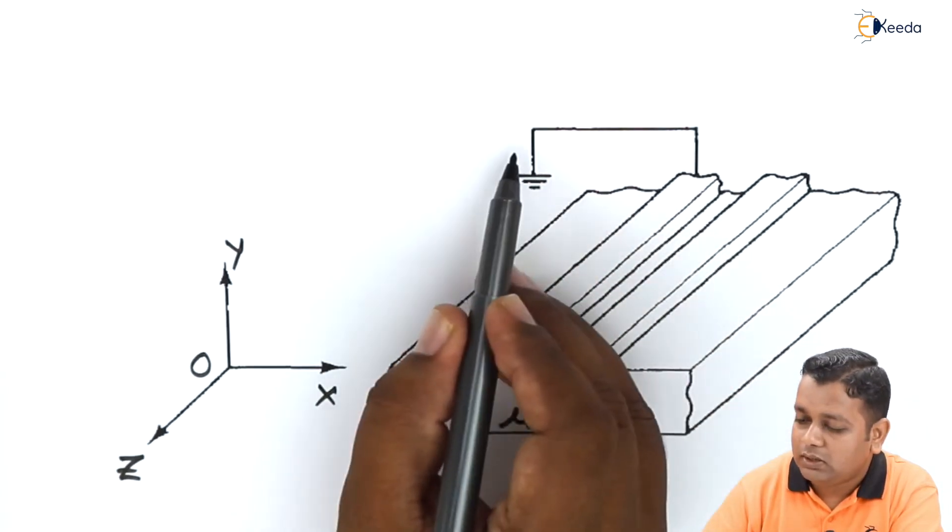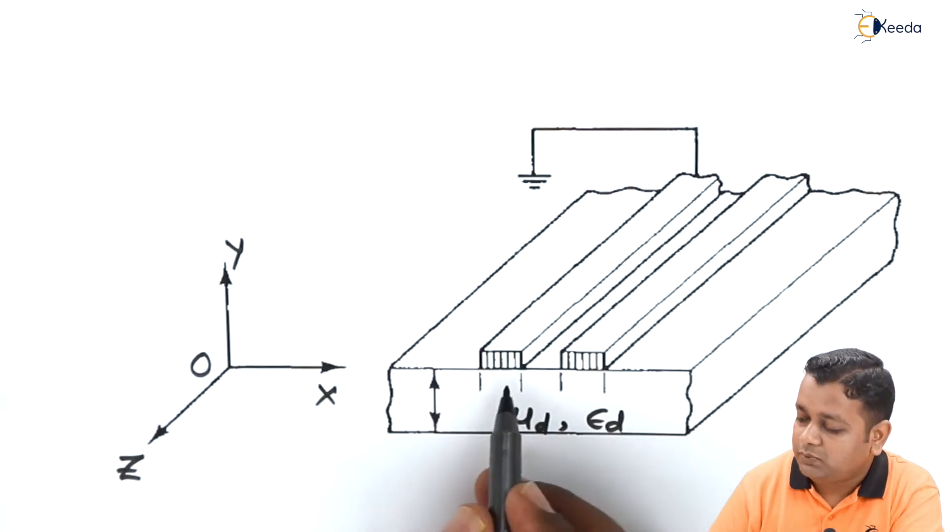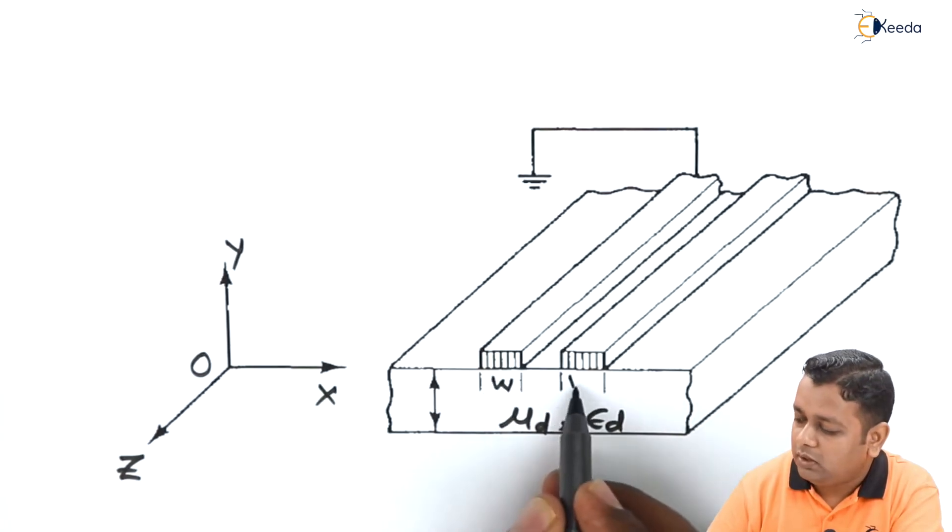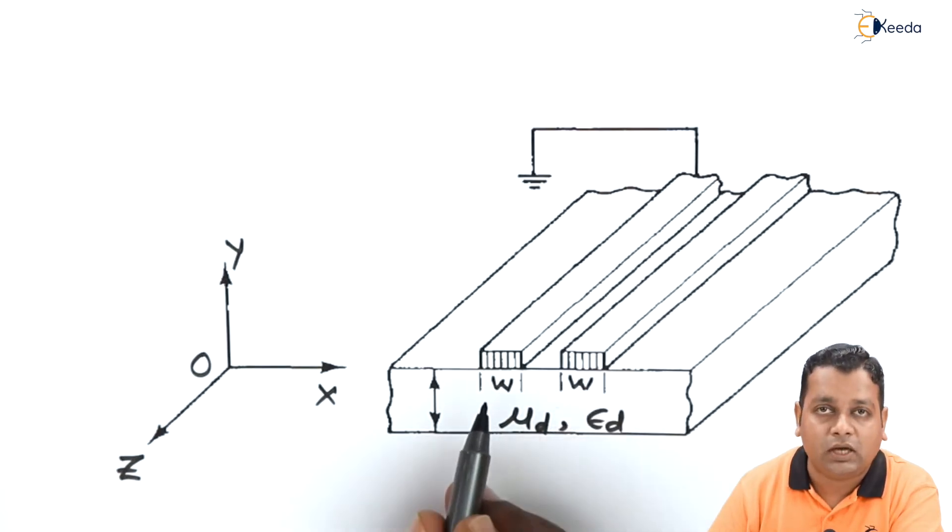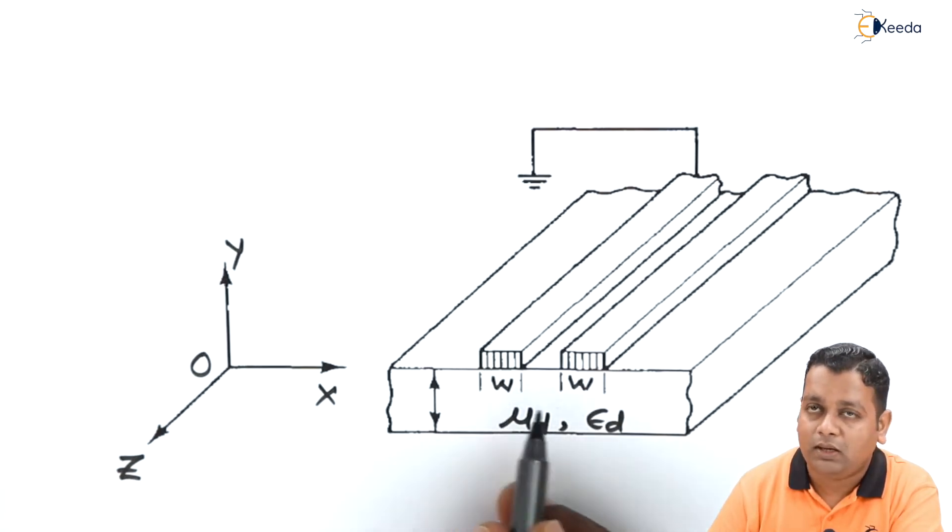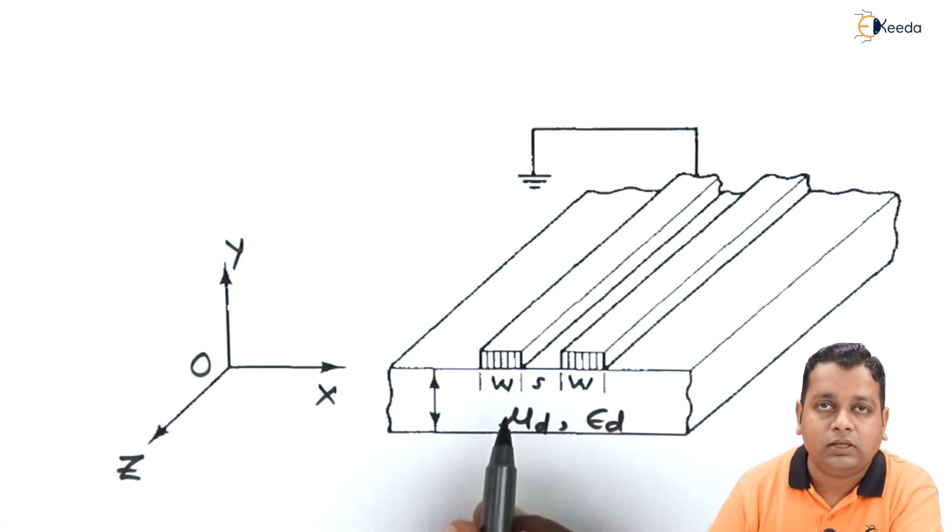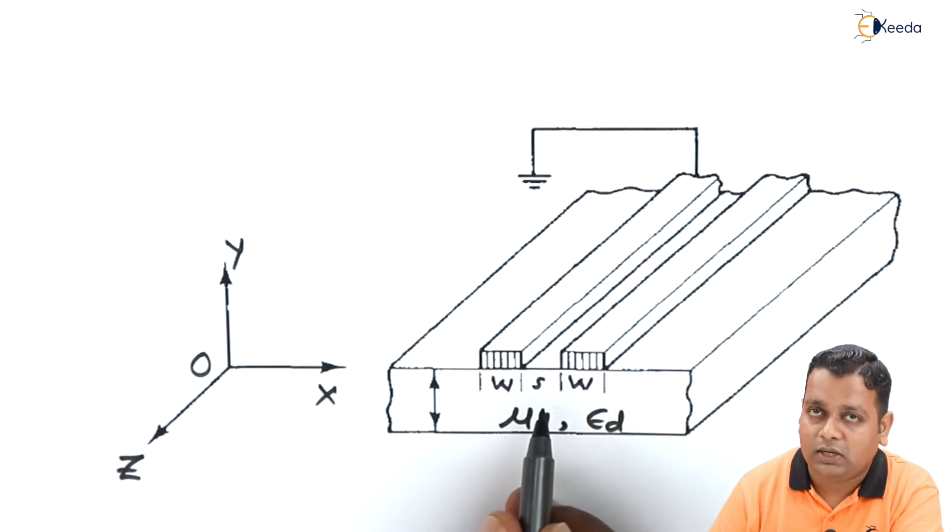As we can see, out of the two strip conductors, one strip conductor is grounded. Of course, as far as the dimensions are concerned, the width of the strip conductor at both places is equal, represented by w, whereas the distance of separation between the two is represented by small s.